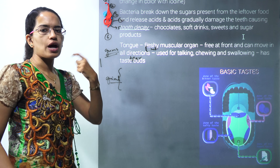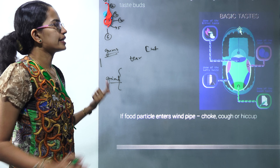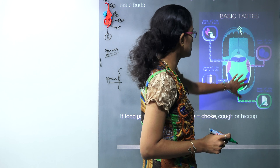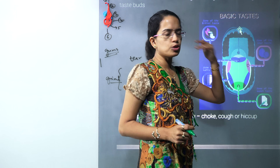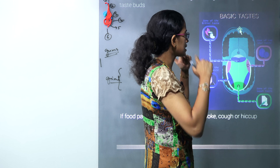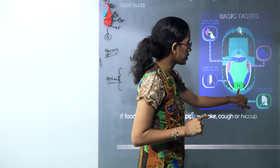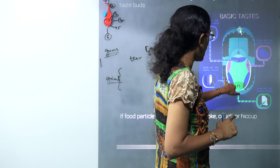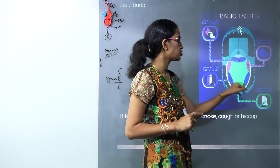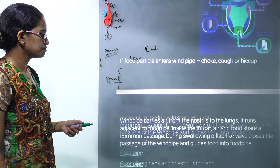Besides the teeth, another important component in the mouth is the tongue, which helps in the movement of food. The tongue has various taste zones: the backmost zone detects bitter taste, towards the sides you have sour taste, towards the front you have sweet taste, and on the other corners beside the sweet zone you have salty taste — four taste zones in total.